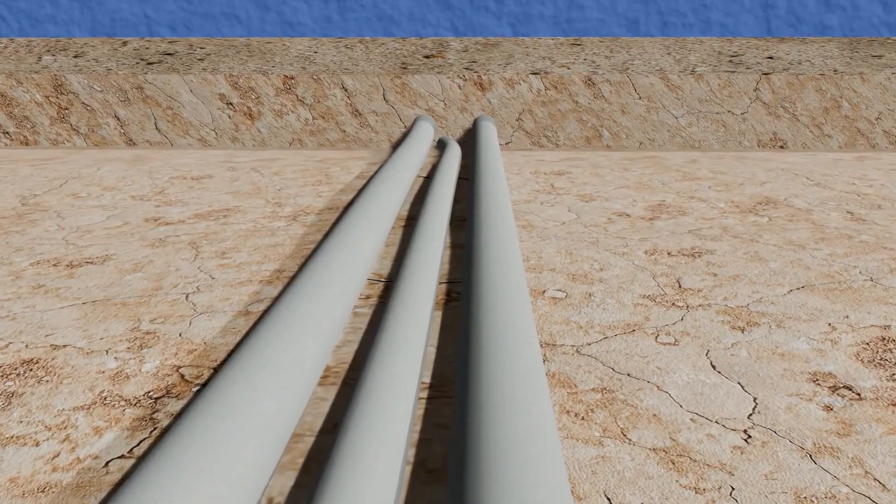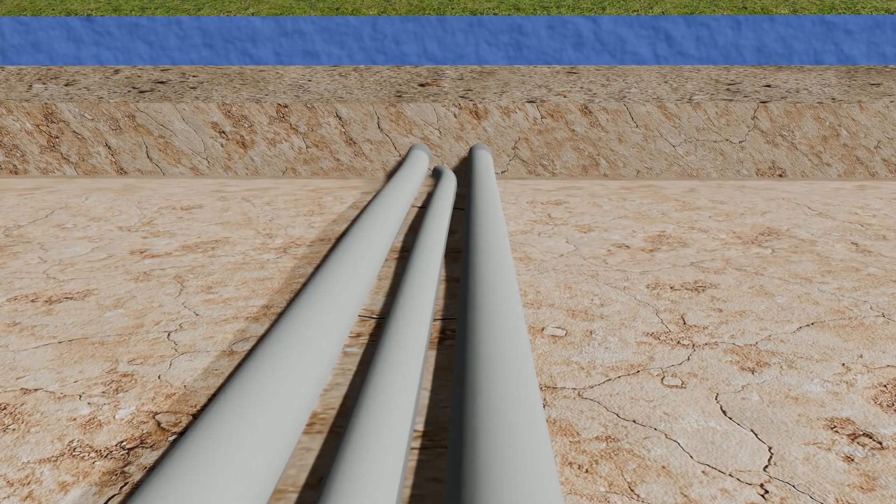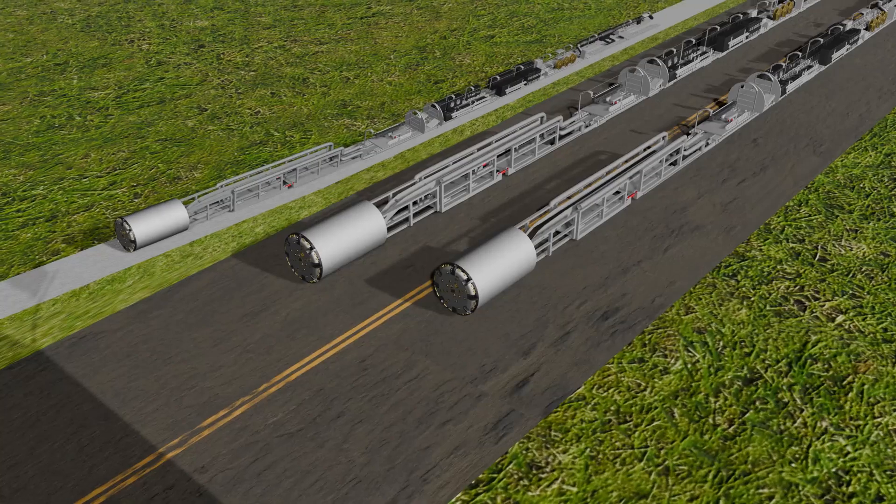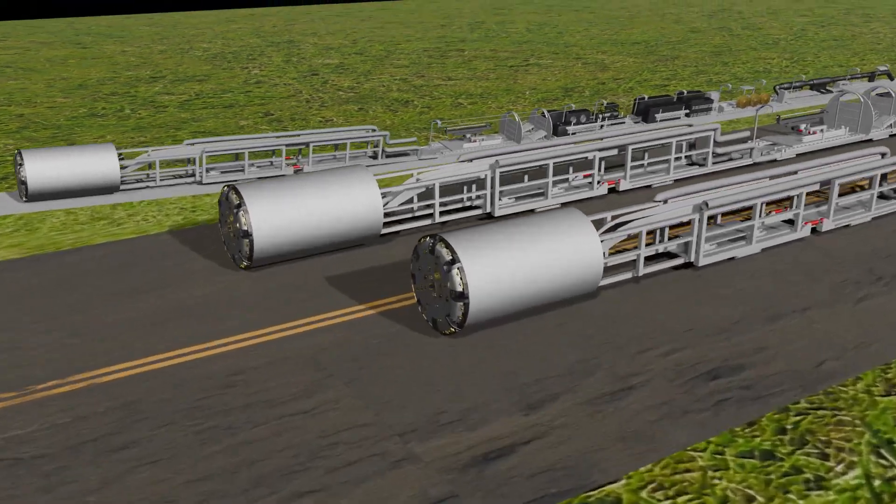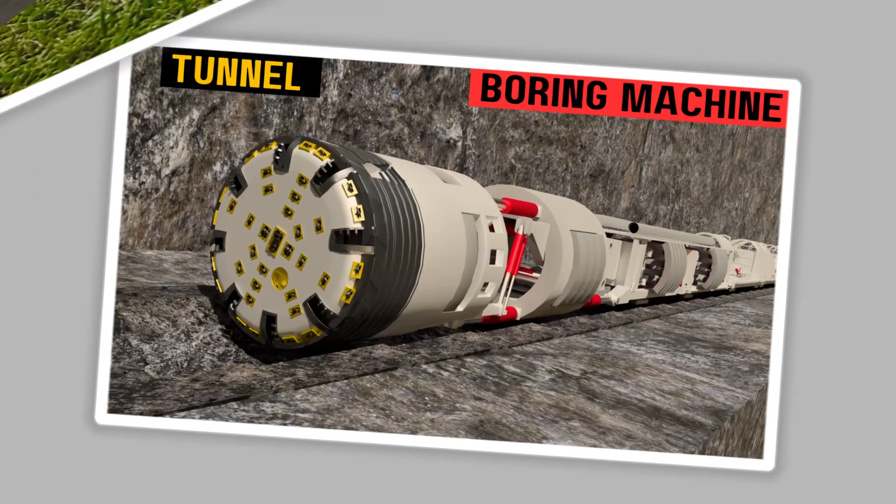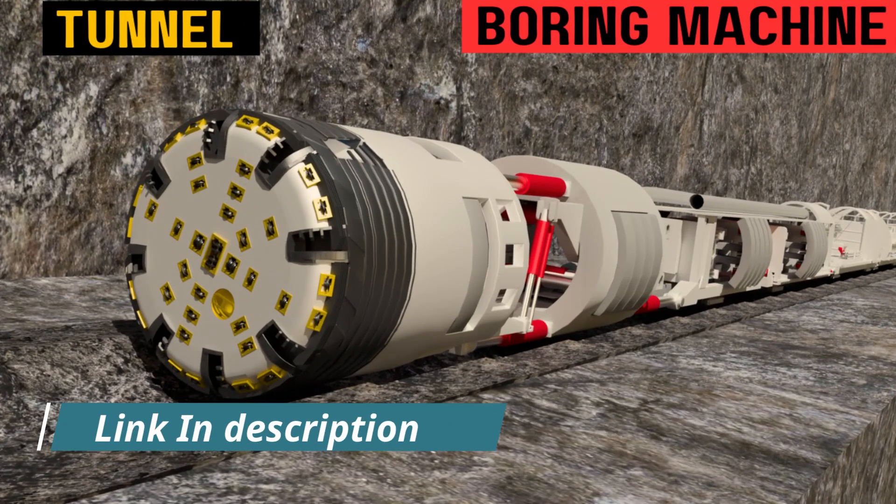For this purpose, a specialized machine, known as the tunnel boring machine, or the TBM, was developed. The TBM features cutting discs at its head, designed to excavate soil efficiently. You can learn more about the detailed working of the TBM through the video link provided in the description.